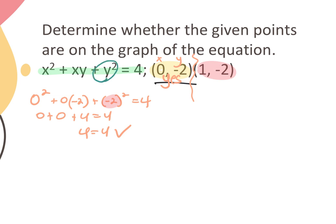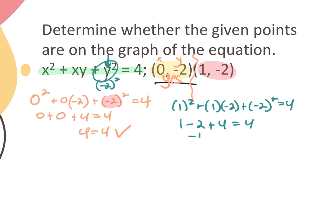When you plug in for a variable, treat it as though it's in parentheses, so it's (-2)² not -(2²) — that distinction matters because the latter gives minus 4. For the second point (1, -2): I get 1 - 2 + 4 equals 4, which simplifies to 3, and 3 does not equal 4, so this point is not on the graph.